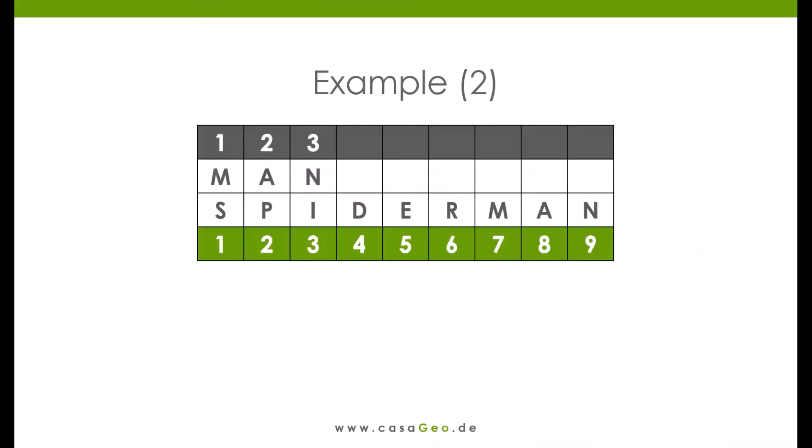Let's go back to our example of man and Spider-Man. According to what we know about Levenstein, the word man should match the syllable man in Spider-Man. But it doesn't. Letters only match if they are the same and in a similar position. With the following formula, you can calculate how far apart two identical letters may be so that Jaro still recognizes them as matching.